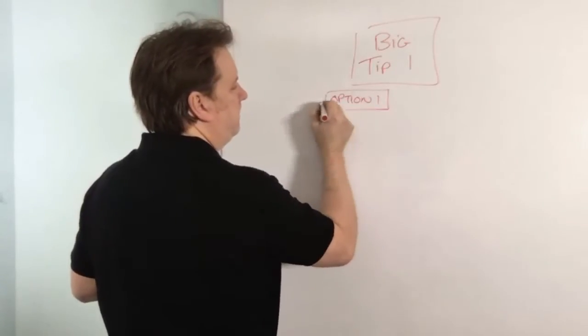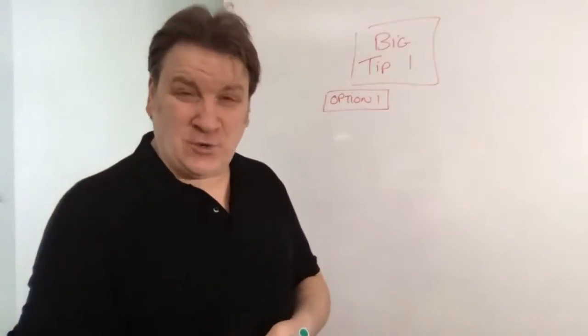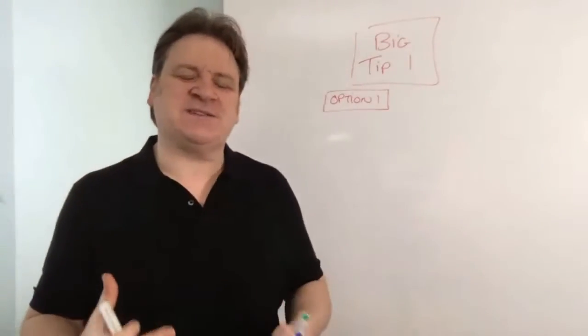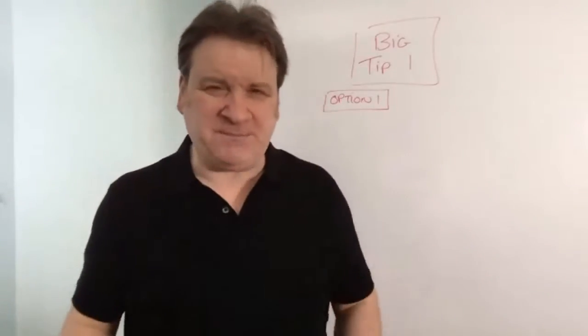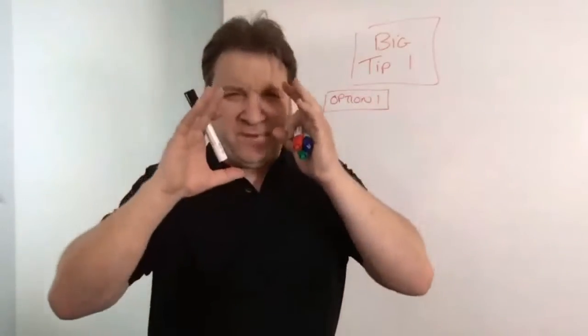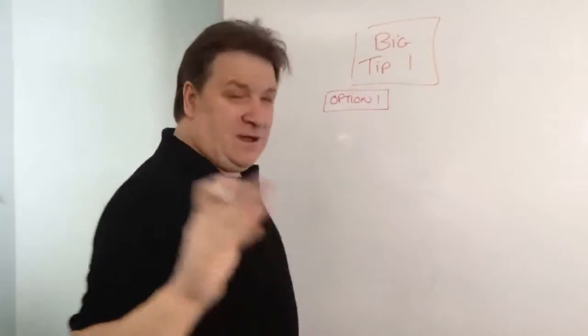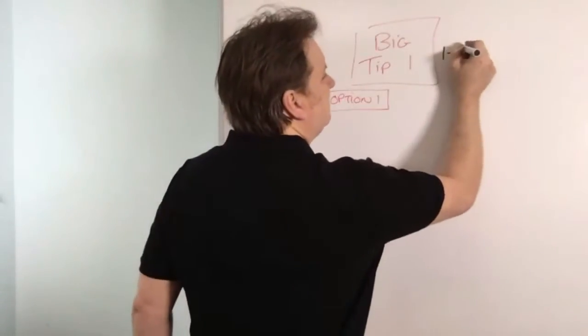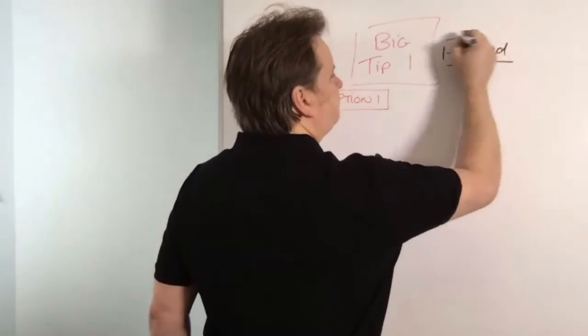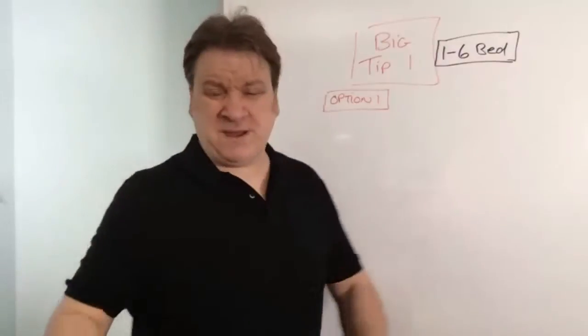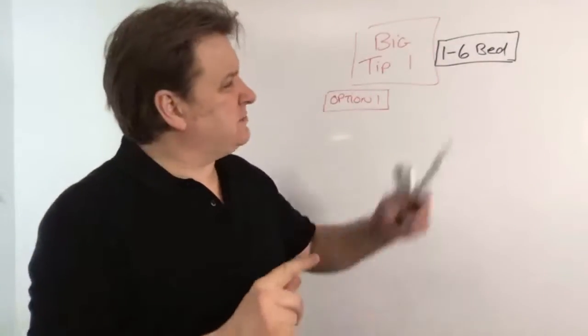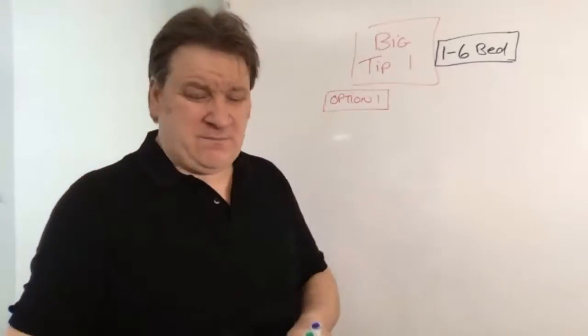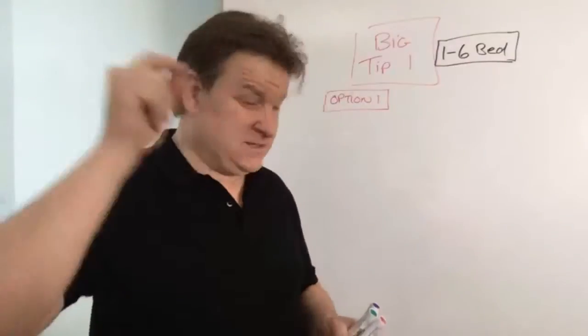Two options. Option One: you can get a local builder or groundsman to do it, but there's a secret to doing this. The easier it is for your groundsman or builder to put a septic tank in, the less it's going to cost. So before you even start, get yourself a low profile, really shallow septic tank. We're dealing with say one to six bed house. Do this and I can save you three to six grand just like that.